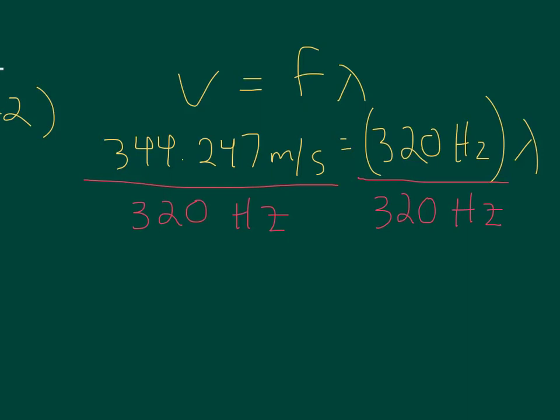And on the right-hand side, 320 hertz, 320 hertz, they cancel out. And on the left-hand side, 344.247 meters per second divided by 320 gives us 1.07577. And that's our lambda.